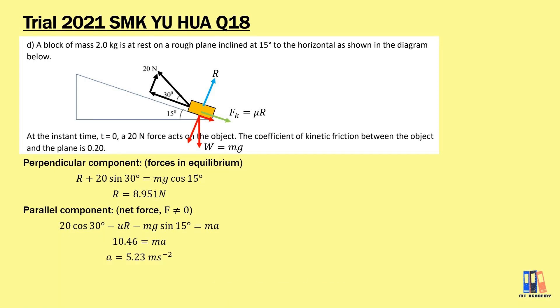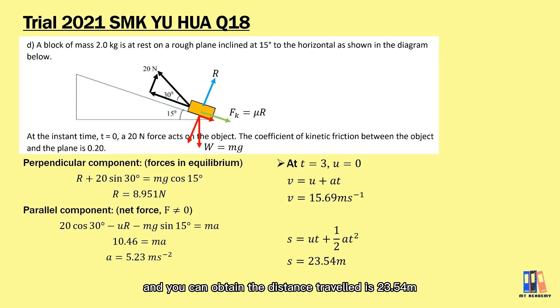Apply the formula F = ma. We can obtain the velocity at 3 seconds is 15.69 meter per second. Then we also can apply the formula s = ut + ½at² and we can obtain the distance traveled is 23.54 meter which is in the direction parallel with the inclined surface.